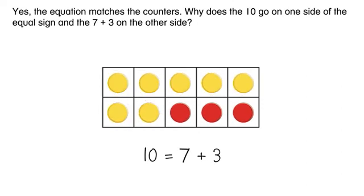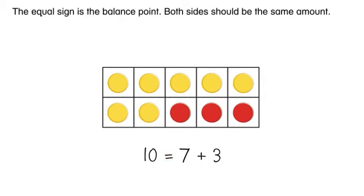The equation matches the counters. Why does the ten go on one side of the equal sign, and the seven plus three on the other side? The equal sign is the balance point. Both sides should be the same amount.